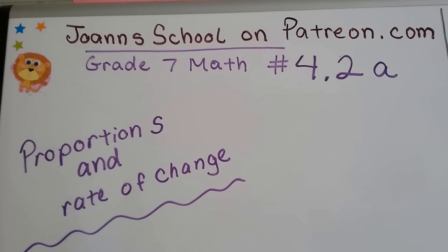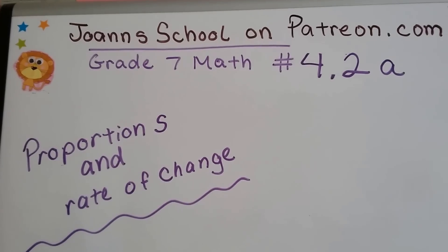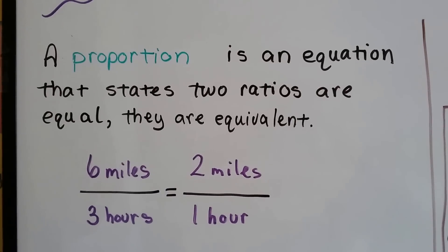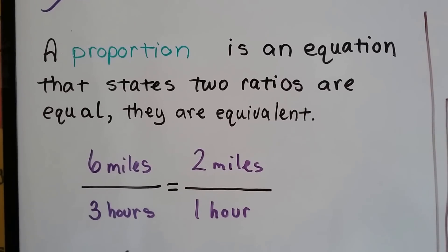Grade 7 math number 4.2a, proportions and rate of change. A proportion is an equation that states two ratios are equal - they're equivalent.